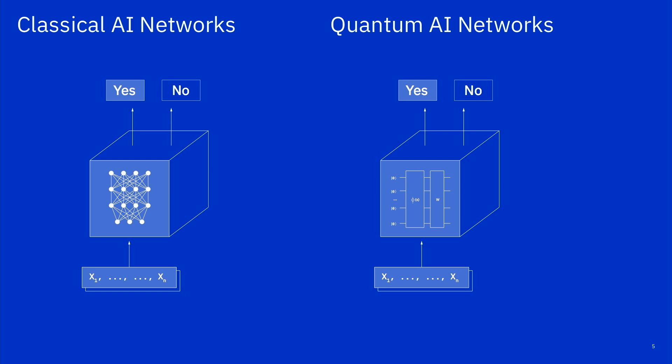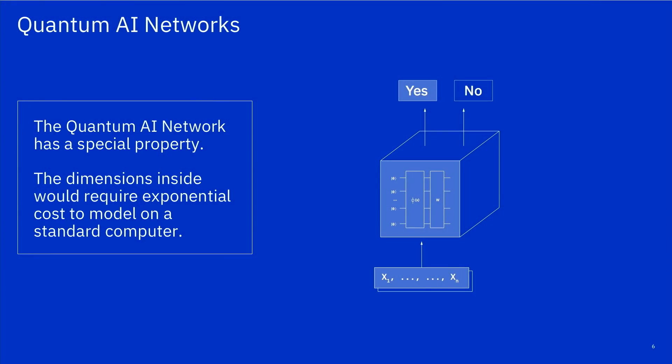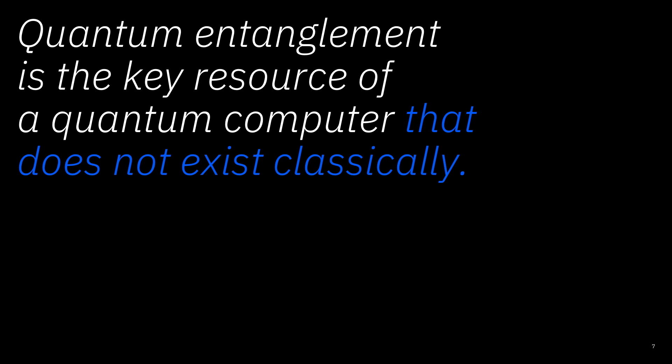What I want to tell you today is a different high-dimensional space that is going to be accessible through quantum computers. It doesn't look exactly like neural networks, it's a different space. But we're going to explore today whether this has power in doing classification tasks. Now, what is unique about this quantum AI network is that it has a special property. The dimensions inside of this quantum AI network would be exponentially costly to model with a classical computer. So what is this property? This property is something called quantum entanglement.